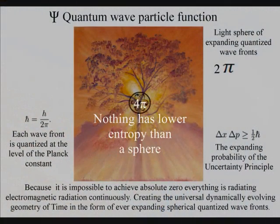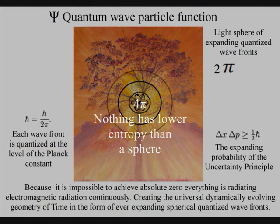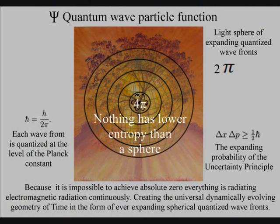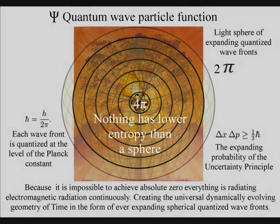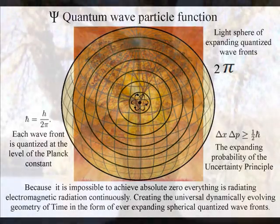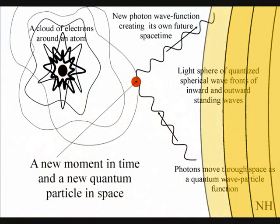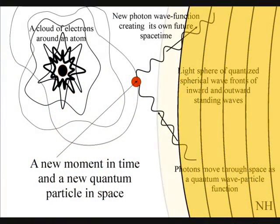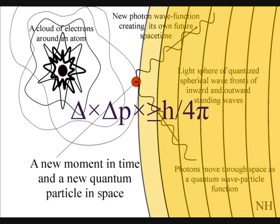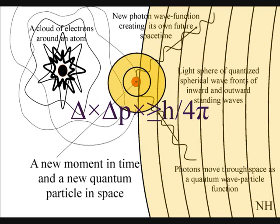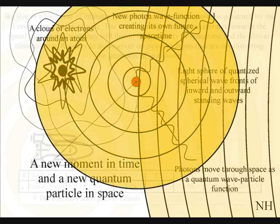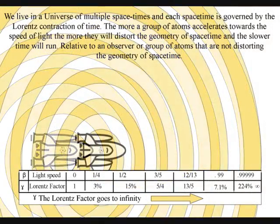The second law of thermodynamics falls out of this theory. The organization for the spontaneous disorganization of entropy is formed by the spherical symmetry of the quantum wave particle function. The spontaneous absorption and emission of light forms the flow of time, with photon energy cascading down, forming greater degrees of freedom for the flow of entropy.